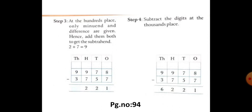Next, step 3. At the hundred's place, only minuend and the difference are given. So that is 2 plus 7. Hence, add both to get the subtrahend. So that is 2 plus 7, we get the answer 9.